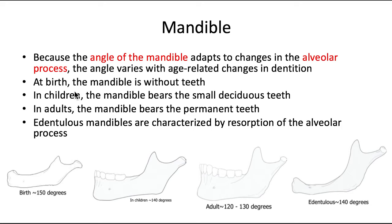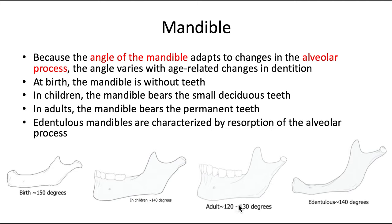In children, the mandible bears small deciduous teeth, and hence the alveolar portion is still poorly developed, so that angle becomes a little less obtuse at 140 degrees. In adults, the mandible bears the permanent teeth, and hence the alveolar portion is fully developed, so that angle decreases to about 120 to 130 degrees on average.